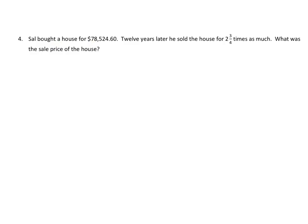This one is not particularly difficult because of the steps, but it is difficult because of the computation. Sal bought a house for $78,524.60. Twelve years later, he sold the house for two and three-fourths as much. What was the sale price of the house? We can change this one to a decimal, but that's a complicated problem. We're going to have $78,524.60 multiplied by two and seventy-five hundredths. That's a pretty difficult computation.